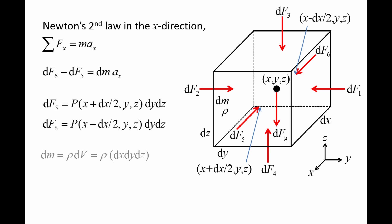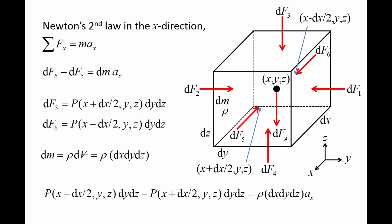The mass of the fluid element dm is equal to the density of the fluid element rho times the volume of the fluid element dx dy dz. Now we substitute the expressions for df5, df6, and dm into the equation of motion in the x-direction.